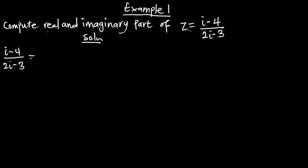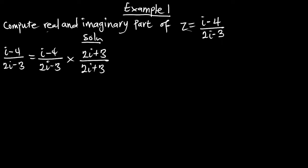This is equal to the expression 2i minus 3, multiplying the conjugate of the denominator, which is going to be 2i plus 3. The same thing on top: 2i plus 3. Multiplying through, we get 2i squared, plus 3i, negative 8i, and negative 12.